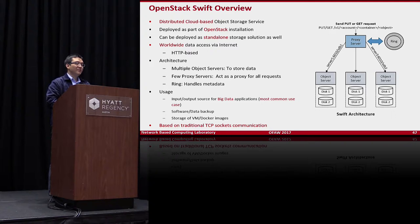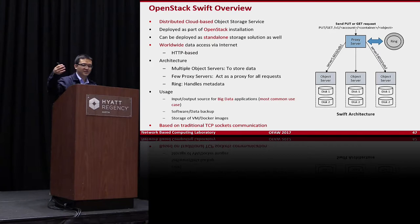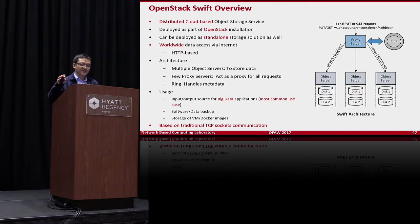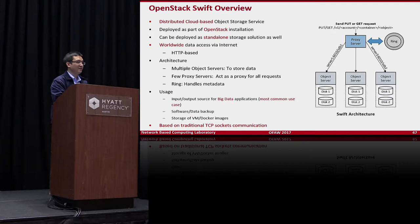Another cloud storage system is OpenStack Swift — a distributed object storage system. It has object servers with disks, a proxy server that handles all requests and distributes them to object servers, and a ring for metadata. Two main bottlenecks: all communication goes through sockets, which is inefficient with InfiniBand-class networks; and the proxy server becomes a bottleneck since all requests must pass through it first.